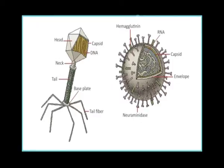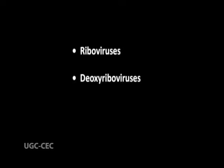Viruses are also classified on the basis of the genetic material they possess inside. Viral genetic material is either RNA, DNA, and rarely both. On the basis of nature of genetic material, viruses have been classified into three types: namely, riboviruses, deoxyriboviruses, and ribodeoxyriboviruses.